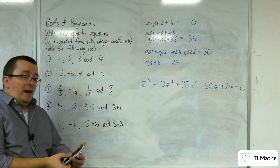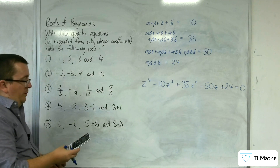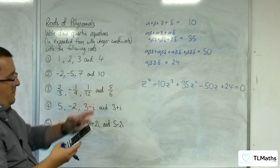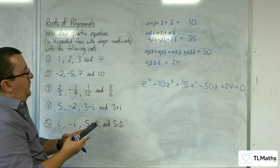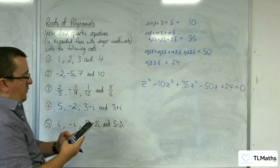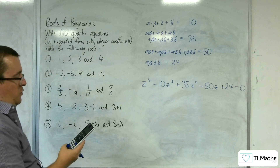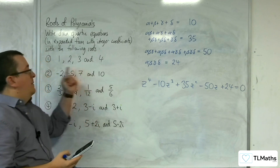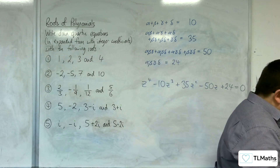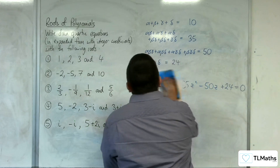So we can just check that. We go to menu and then A for the polynomial solver, and we want degree 4. So if we type in 1, minus 10, 35, minus 50, and 24, we get 4, 3, 2, 1. And they are my roots, so I know that it's worked. So that's number 1.